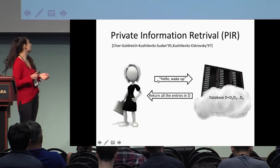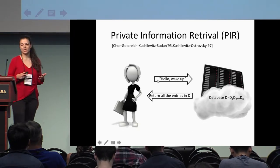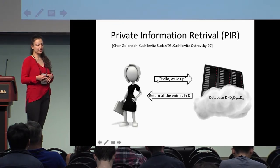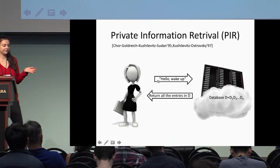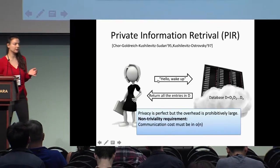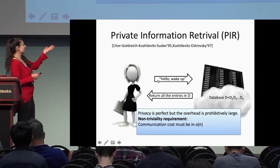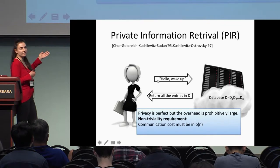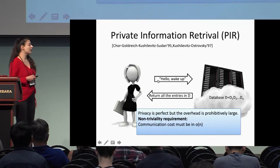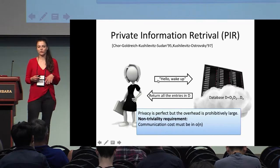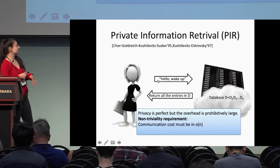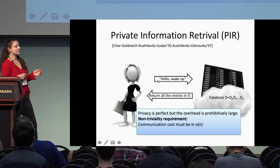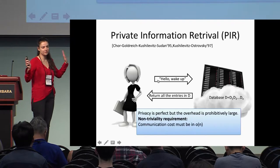There's a trivial solution: Alice can send a generic request like 'wake up,' and the database sends back all its entries. This does satisfy the privacy notion, because the database sends all the data so you can't learn anything about Alice's index i. However, this is very inefficient — the communication complexity is huge. Imagine the server is Google and Alice asks for a website, then the server sends back the whole internet.